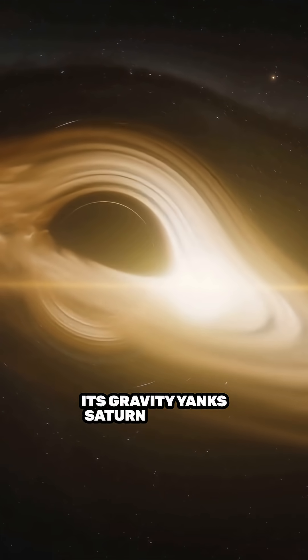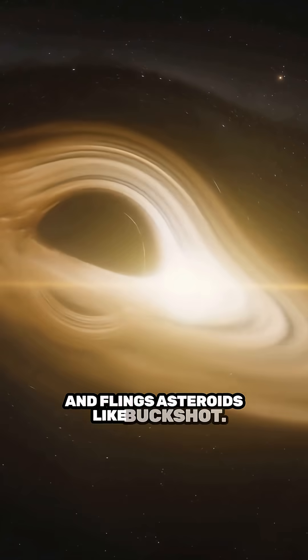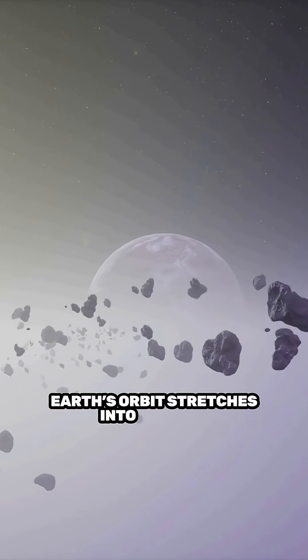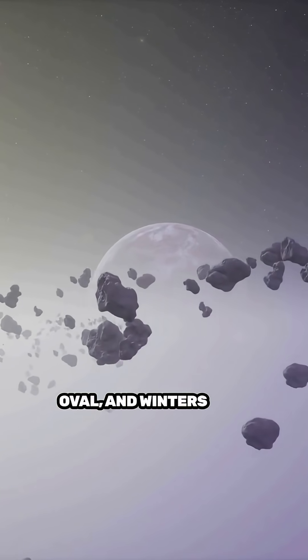Its gravity yanks Saturn outward and flings asteroids like buckshot. Earth's orbit stretches into a skinny oval, and winters last months longer.